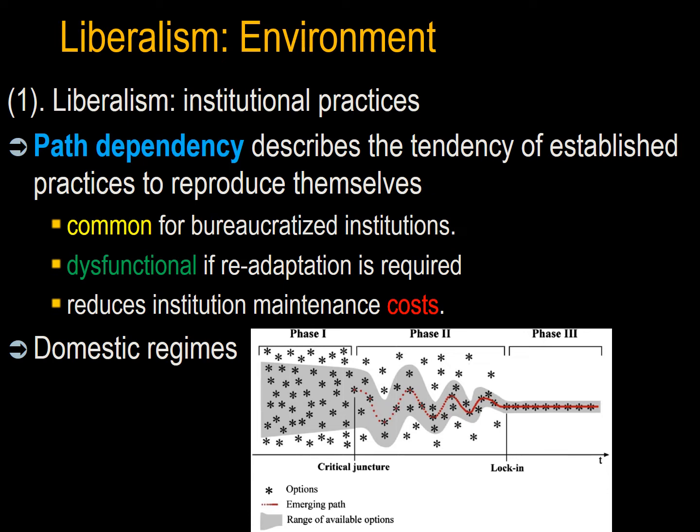Liberalism would predict that a functional application of domestic, legal, and institutional practices to solve domestic environmental challenges would also be applied to manage international environmental challenges. Path dependency describes the tendency of established practices to reproduce themselves, which is very common for bureaucratized institutions. This can be dysfunctional if readaptation is required to a changing environment, but reproducing past practices reduces institution maintenance costs. The liberal focus on domestic regimes may provide a better explanation of environmental issues and state collapse, and the resulting foreign policies. There are arguments that democratic regimes with short election cycles are unable to engage in the long-term planning necessary to address the anthropogenic environmental challenge.